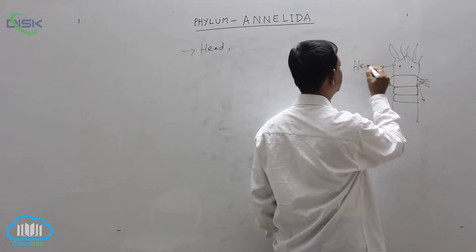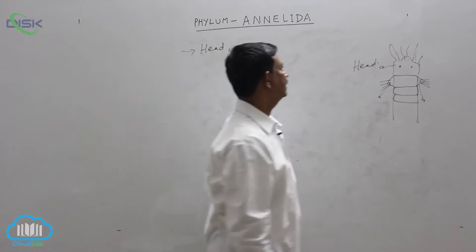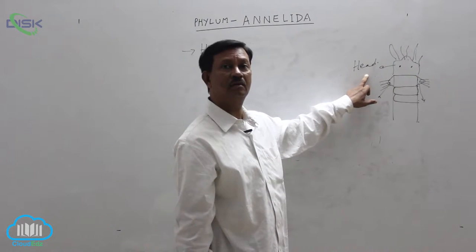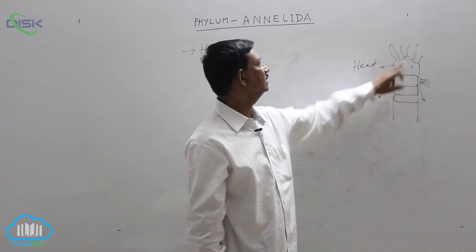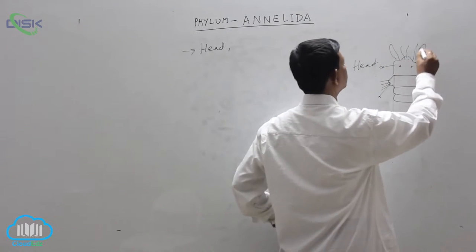This is known as cephalization or head region is present at the anterior region in some animals, not all animals. Eyes are present and tentacles or palps are also present.